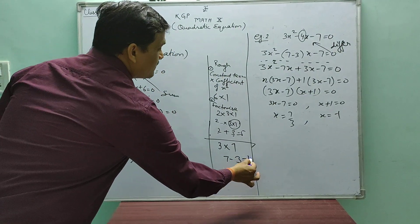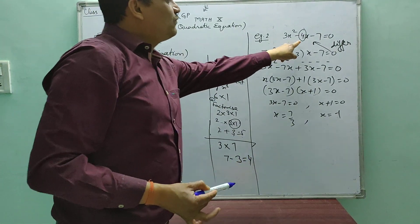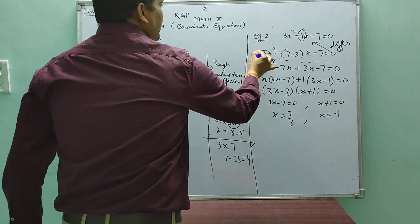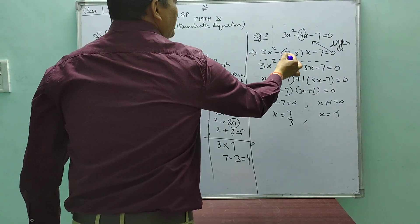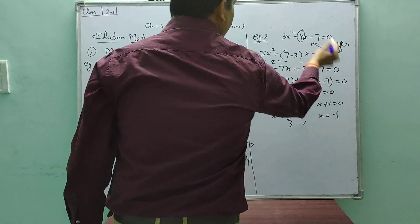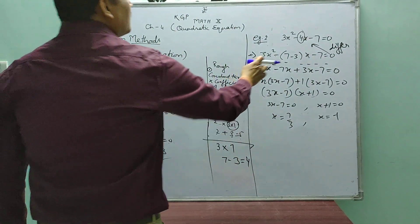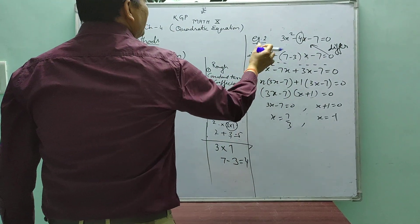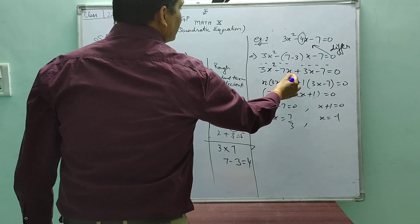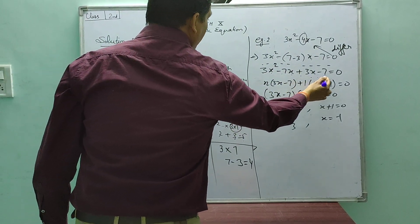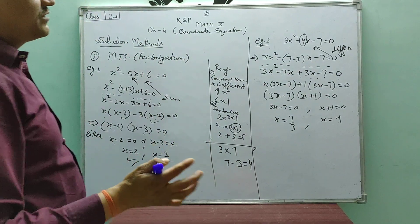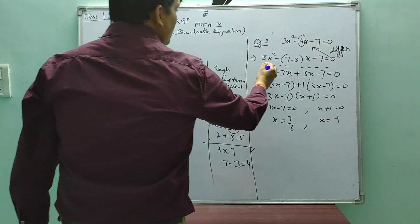We replace the 4 in the middle term by 7 minus 3 in the next step. So the next step is: 3x squared minus (7 minus 3)x minus 7 equals to 0. Further, opening the bracket gives: 3x squared minus 7x plus 3x minus 7 equals to 0. Now we take pairwise common from these four terms.